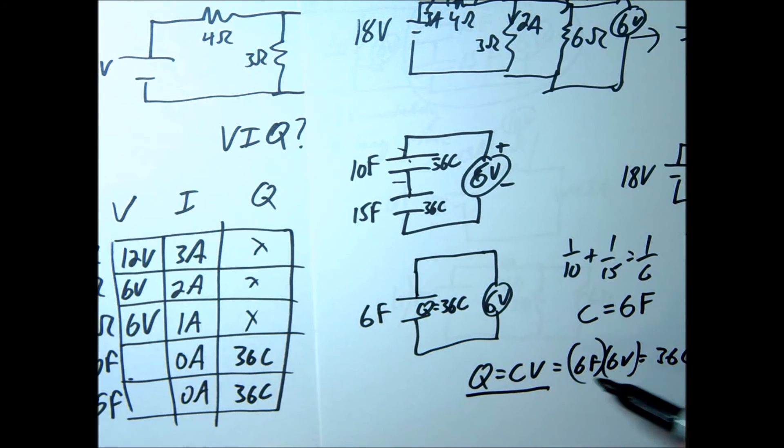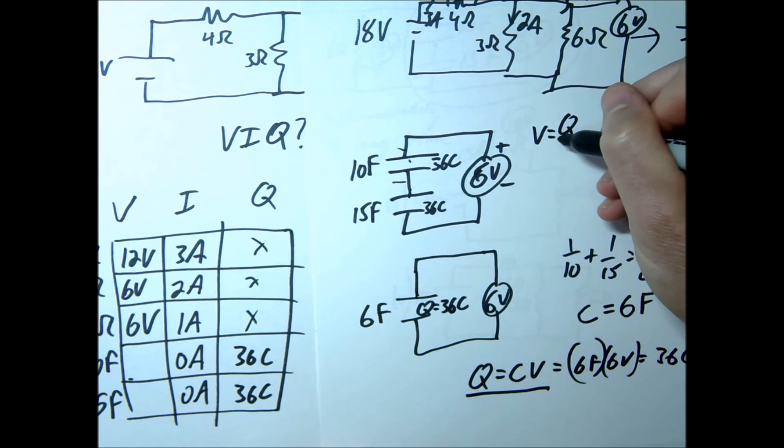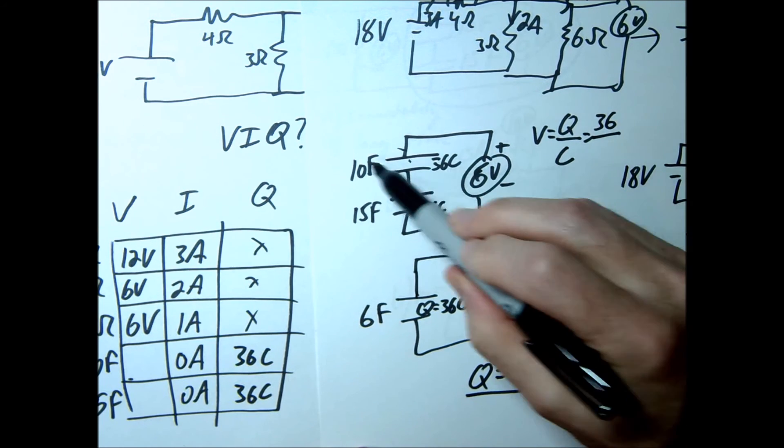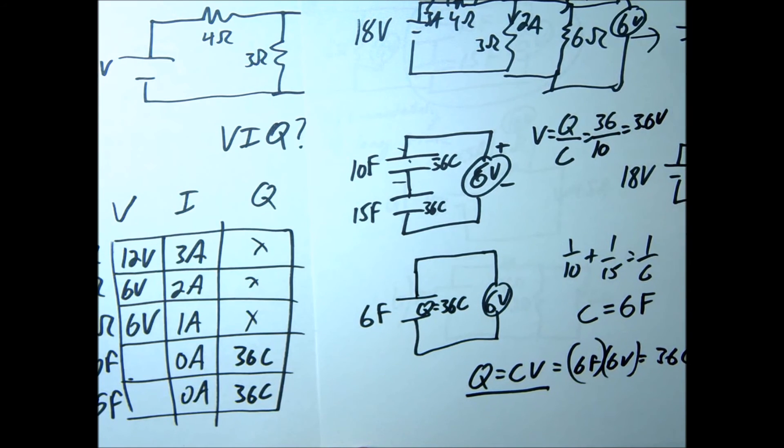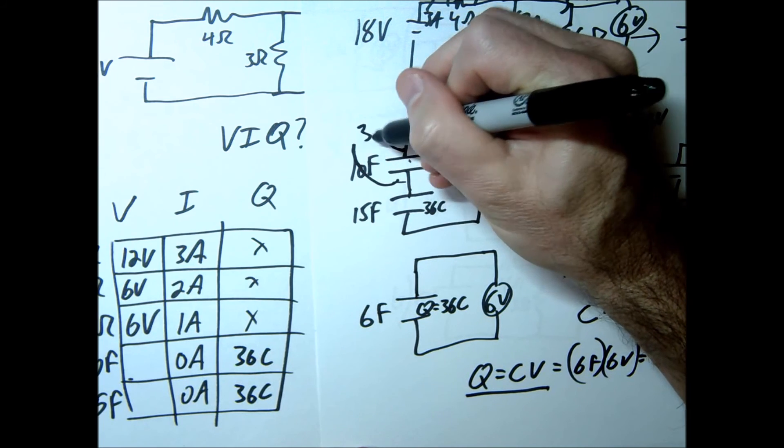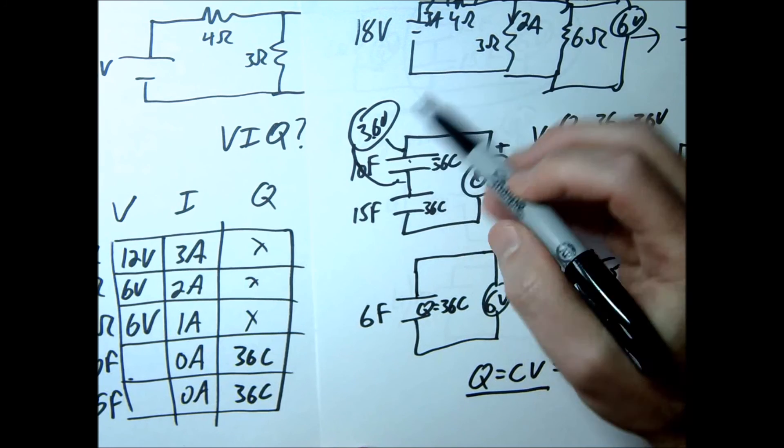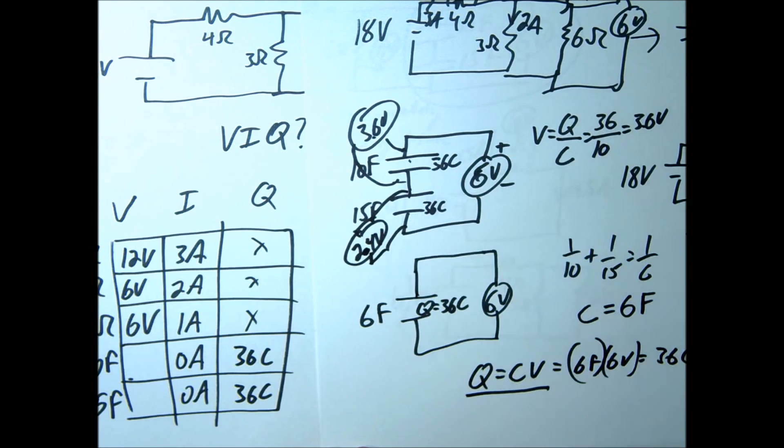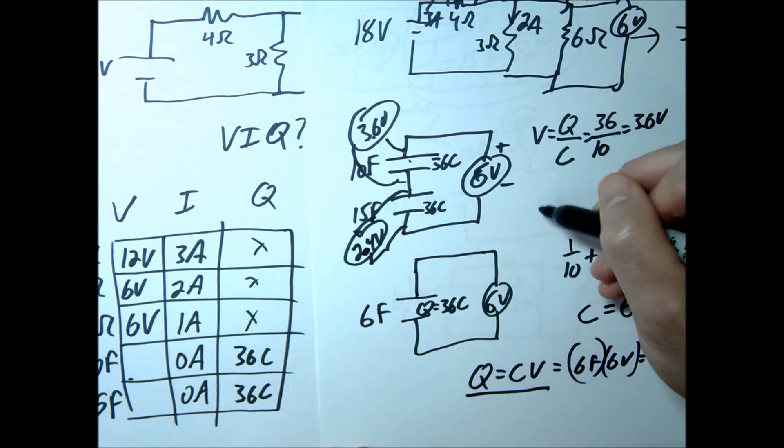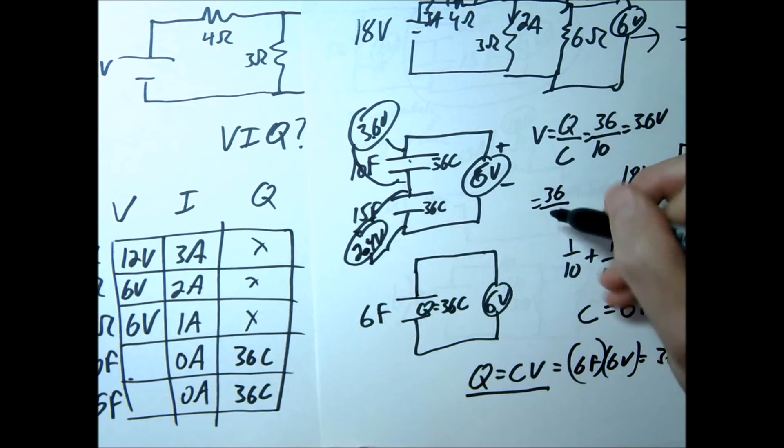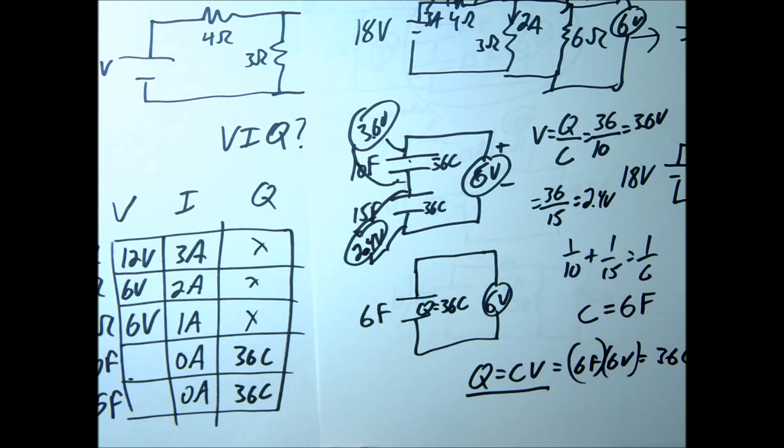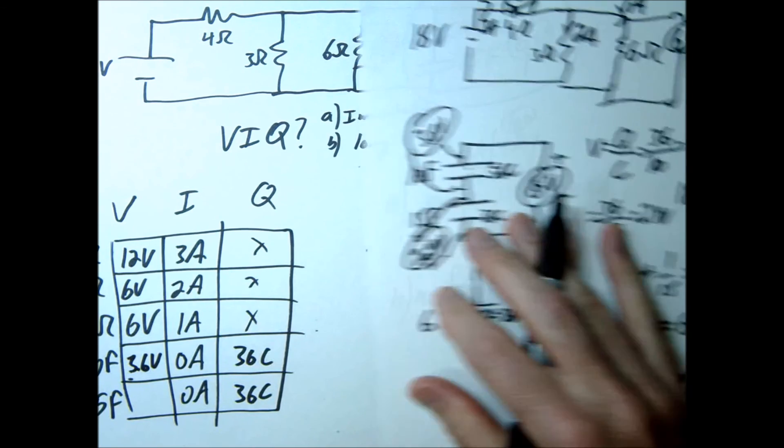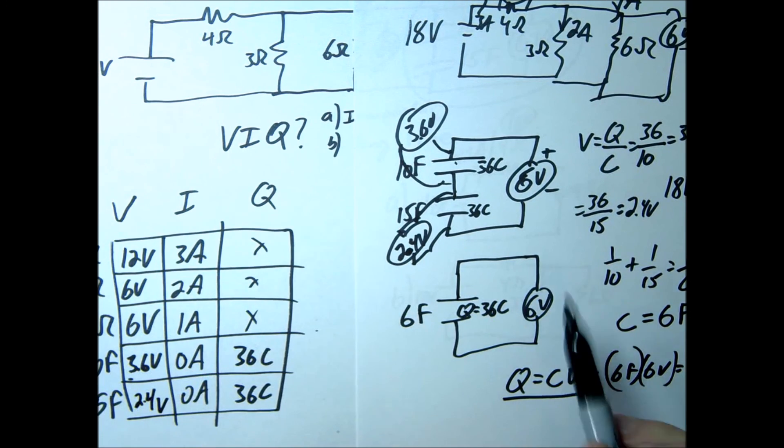We'll use the same thing, Q equals CV, or in this case V equals Q over C. And since we do know the charge, this would be 36 divided by 10. That's 3.6 volts, so that means there's going to be 3.6 volts across this one. Remember this should now add up to 6 volts, which means this must be 2.4 volts across this. And you could also use Q over C. This would be 36 divided by 15, and you should get 2.4 volts. So let's finish this up. We're going to put this as 3.6 volts across the 10 farad capacitor and then 2.4 volts across the 15 farad capacitor.